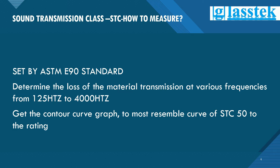The ASTM E90 standard determines the transmission loss of a material at various frequencies from 125 Hz to 4000 Hz. You get a control curve graph, and the most resembled curve of STC is used to determine the ratings.